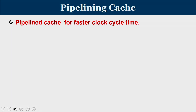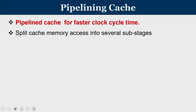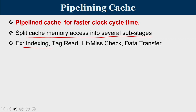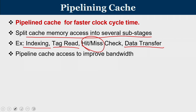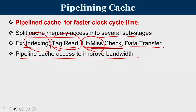The next technique is pipelining the cache. There are different sub-operations in a cache access: index using the index bits to find the set number using a decoder; read the tag present in the corresponding set; compare the tag stored in the cache line with the tag of the incoming address — the hit or miss check; and if it is a hit, perform data transfer. We pipeline the cache access to improve bandwidth, so while performing the hit or miss check for one address, we read the cache for the next, and index for the one after that.